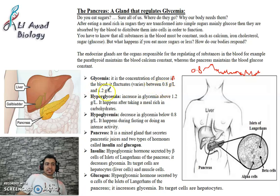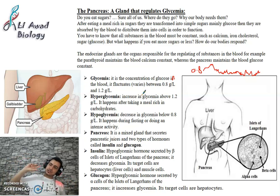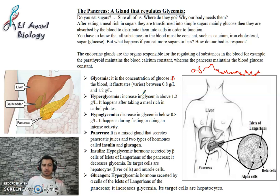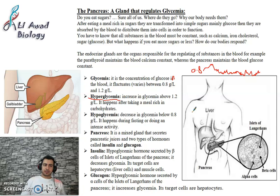Glycemia is constant, maintained between 0.8 and 1.2 g/L. What happens if glucose concentration in the blood increases above 1.2 g/L? This is called hyperglycemia — 'hyper' means high — meaning an increase in blood glucose above 1.2 grams per liter.